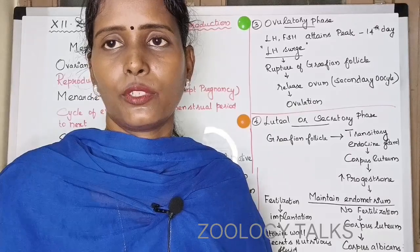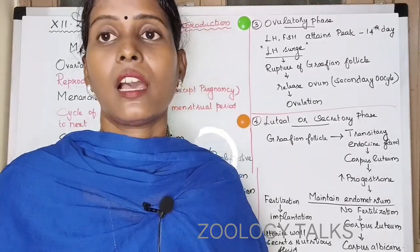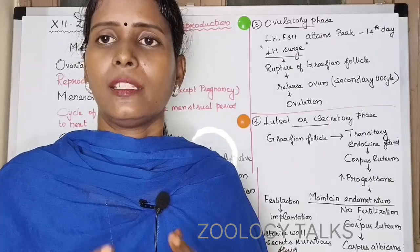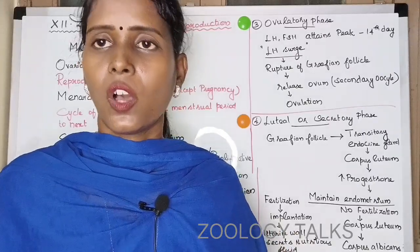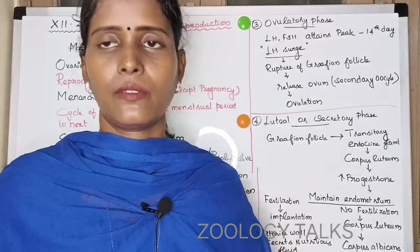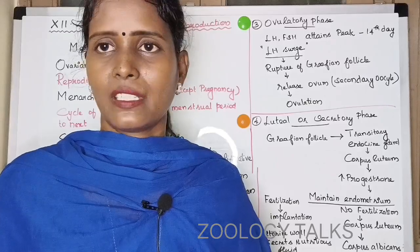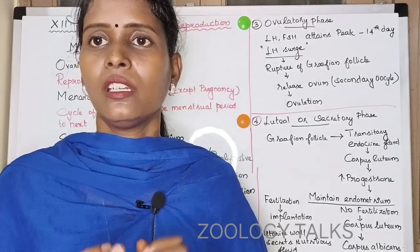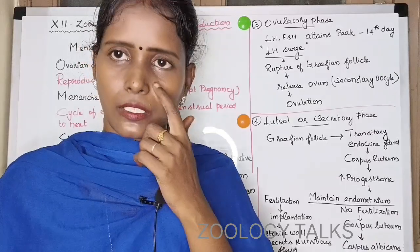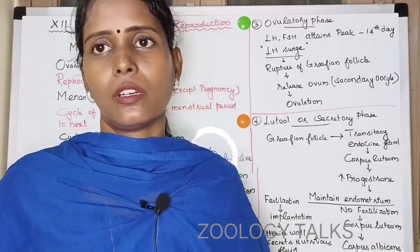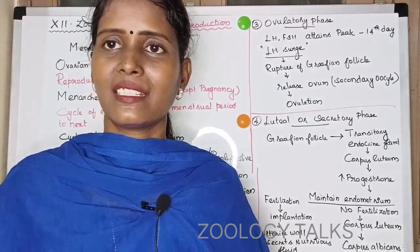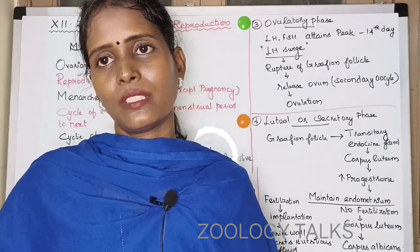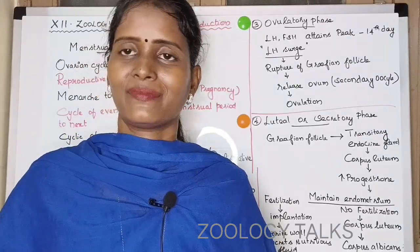This completes the menstrual cycle. Over these four phases, hormonal changes drive the cycle. If fertilization does not occur, the menstrual cycle repeats. This is a very important topic. If you have doubts, write them in the comment section. Do watch our other videos and support. Thank you for watching.